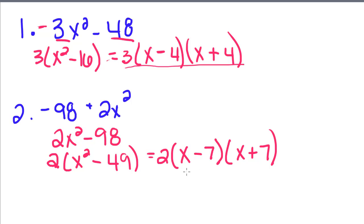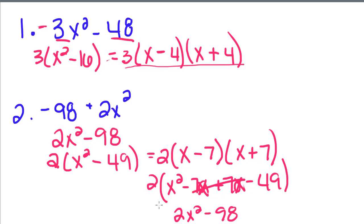You can always double check that you factored it correctly by foiling this out. So you'd get 2 times x squared minus 7x plus 7x minus 49. Those cancel. And then if you distribute that 2, you get 2x squared minus 98, which matches our original equation.